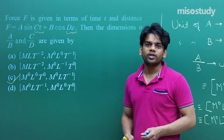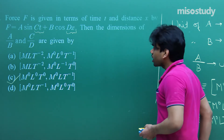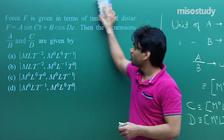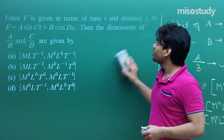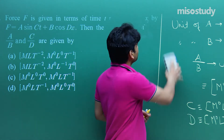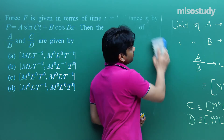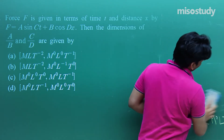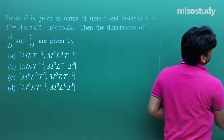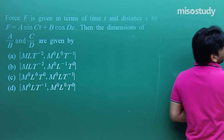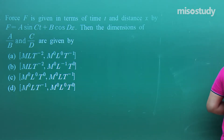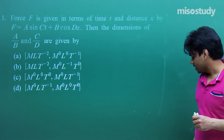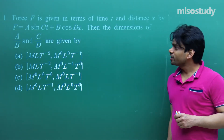This is how we find dimensions of given values and variables. This question was asked in one of the previous examinations, so you get an idea of what kind of questions appear in your JEE Main exam. Let's go ahead with the next question.